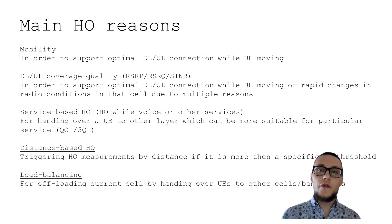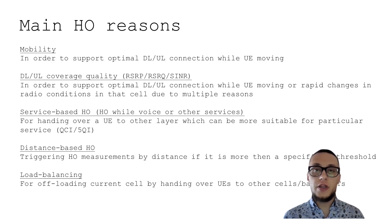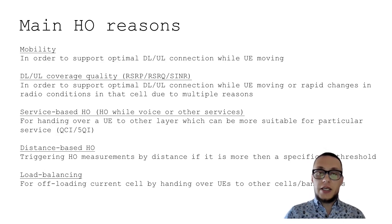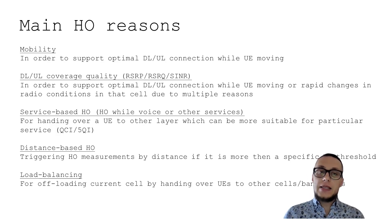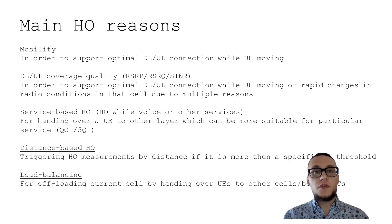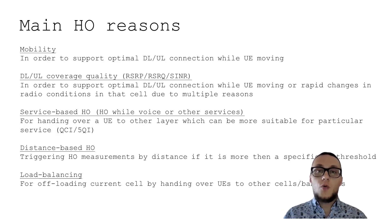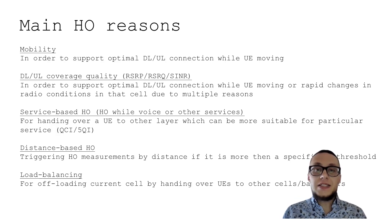When it comes to main handover reasons, there are multiple reasons for performing a handover in a network. First of all, of course, mobility. Mobility is what gives us real mobility in any wireless network. In order to support optimal downlink and uplink connection while user equipment is moving, handovers may happen. That is basically one of the major reasons for any handover — user equipment mobility.